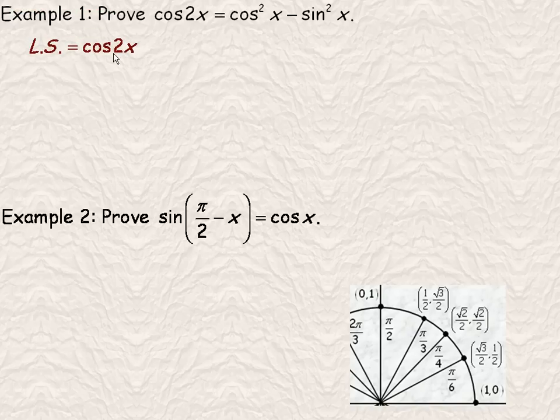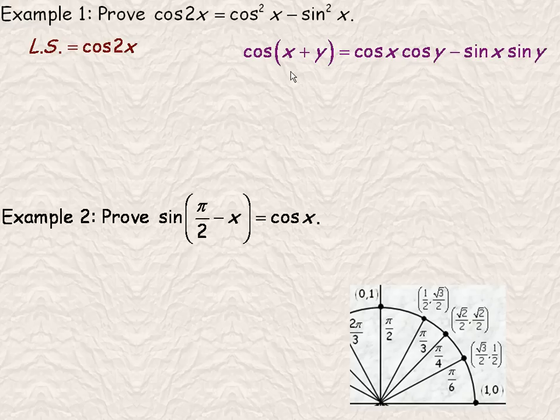We'll reduce that in a way so that there's only cosines or sines of just x, and no longer a 2x here. And the identity that we're going to use is the compound angle identity for cosine, and it says cos(x + y) = cos x cos y - sin x sin y.